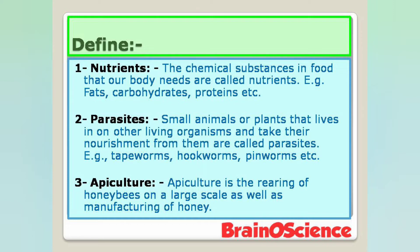Let's get started. Here are some important definitions from Sources of Food. Number one is Nutrients. The chemical substances in food that our body needs are called nutrients. Example: fat, carbohydrate, protein, etc. — ki humari body ko jin chemical substances ki need hoti hain unko nutrients kehte hain.